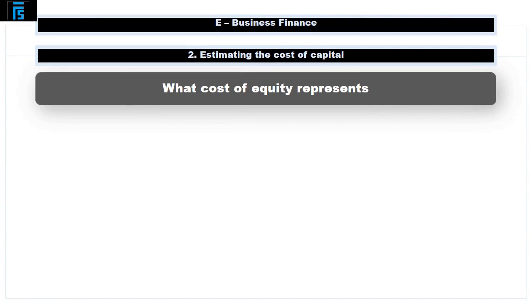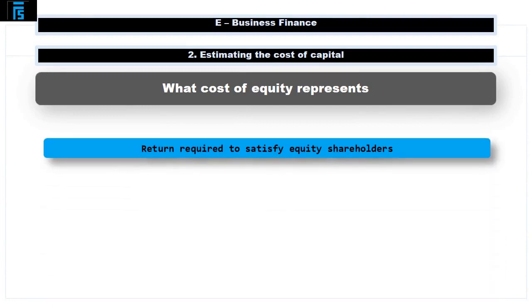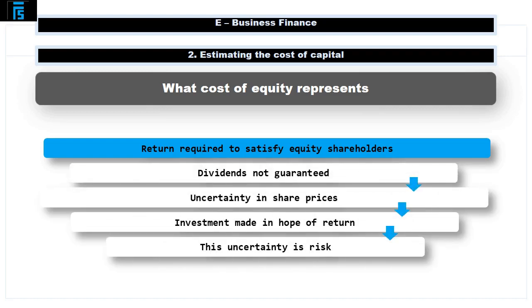What the cost of equity represents. The cost of equity is the return required in order to satisfy equity shareholders. As discussed in the Sources of Finance presentation, dividends are not guaranteed and neither is it certain that share prices will increase. Despite this, shareholders invest in the hope or expectation that one or both of these things will happen. It is this variability or uncertainty in the outcome that is described as risk, and given that the risk — i.e. variability — is high, the return required and therefore the cost to the company will also be high.